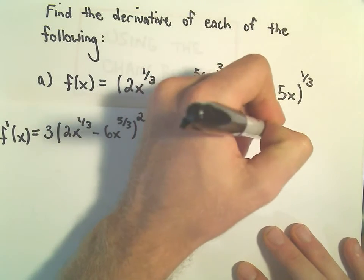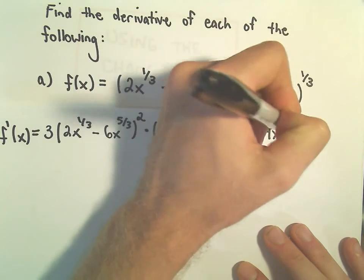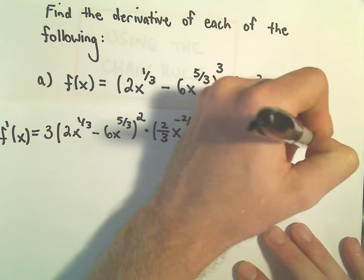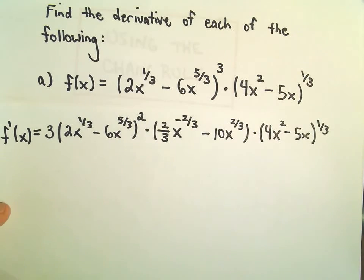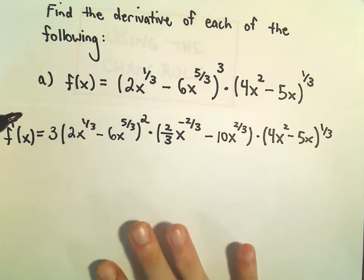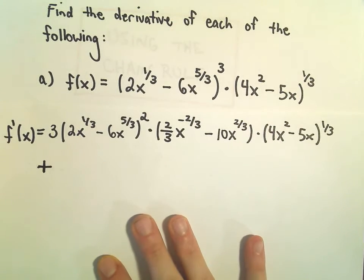And we would just leave the other factor alone: 4x squared minus 5x to the 1/3 power. And now a plus sign for our product rule.